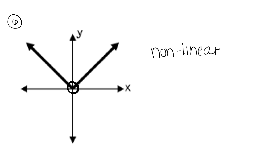Remember, linear has to be a perfectly straight line — no curves, no bumps, no changes. Perfectly straight. That is not a straight line.